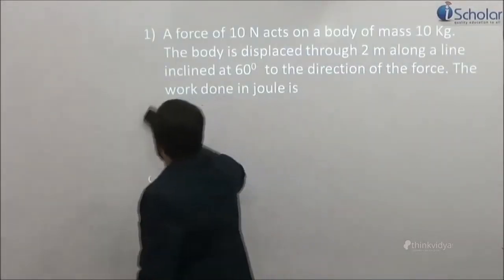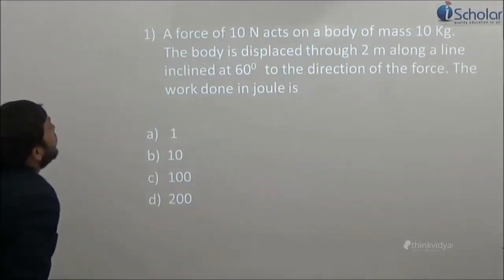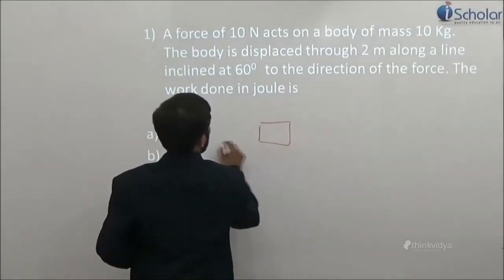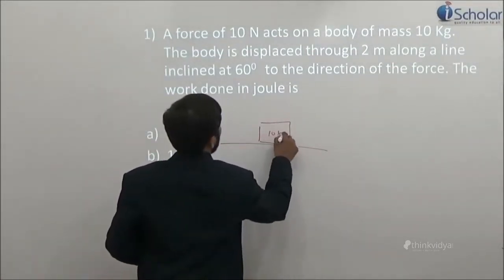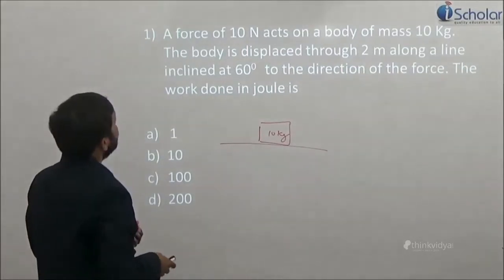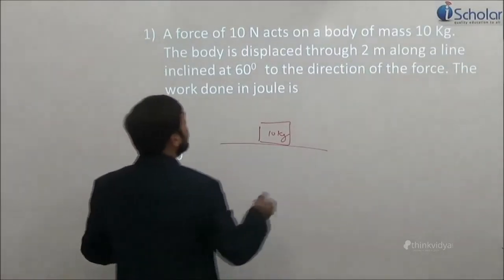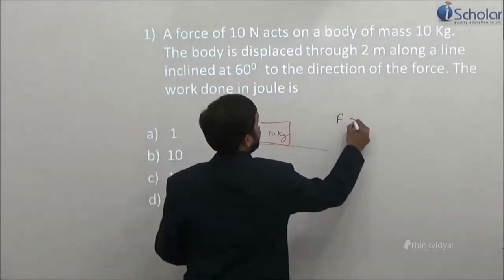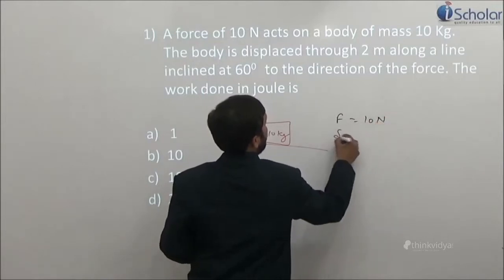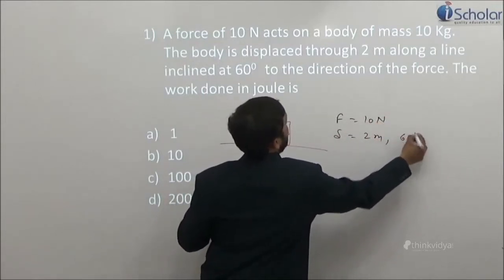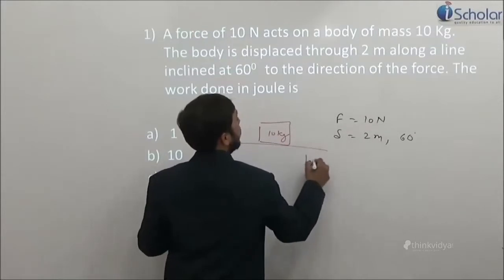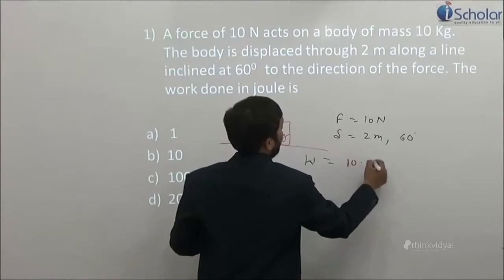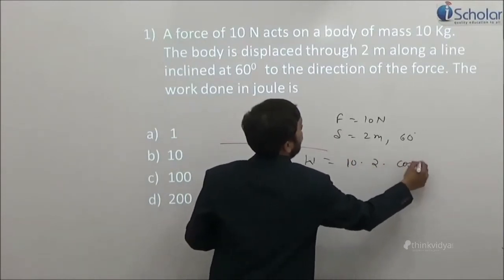Question number 1 appeared. A force of 10 Newton acts on a body of mass 10 kg. The body is displaced through 2 meter along a line inclined at 60 degree, so force equals 10 Newton, displacement is 2 meter at 60 degree. What is the work done if they ask?